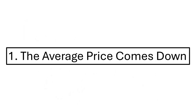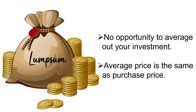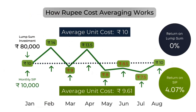Advantage number one: the average purchase price comes down. When you invest a lump sum in a mutual fund, you do not get the opportunity to average out your investment. Hence, in this case, your average price remains the same as the purchase price. However, when you take the RCA approach, your investment gets spread out. Moreover, as you buy more units when the NAV is low, the average price per unit decreases. Therefore, the RCA approach lets you get more units at less price and strike gold when the market goes up.